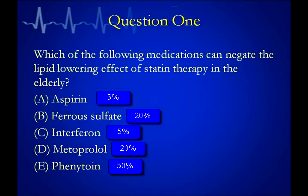Returning to question one — 5% said aspirin, 20% ferrosulfate, 5% interferon, 20% metoprolol, and 50% phenytoin. The majority picked the correct answer. Kudos on your pharmacokinetic and pharmacodynamic knowledge. A lot of that has to do with the instant access we have with smartphones and the ability to get to the internet. That's an incredible advantage in training. I think we'll make fewer mistakes by looking things up — it's a good thing.